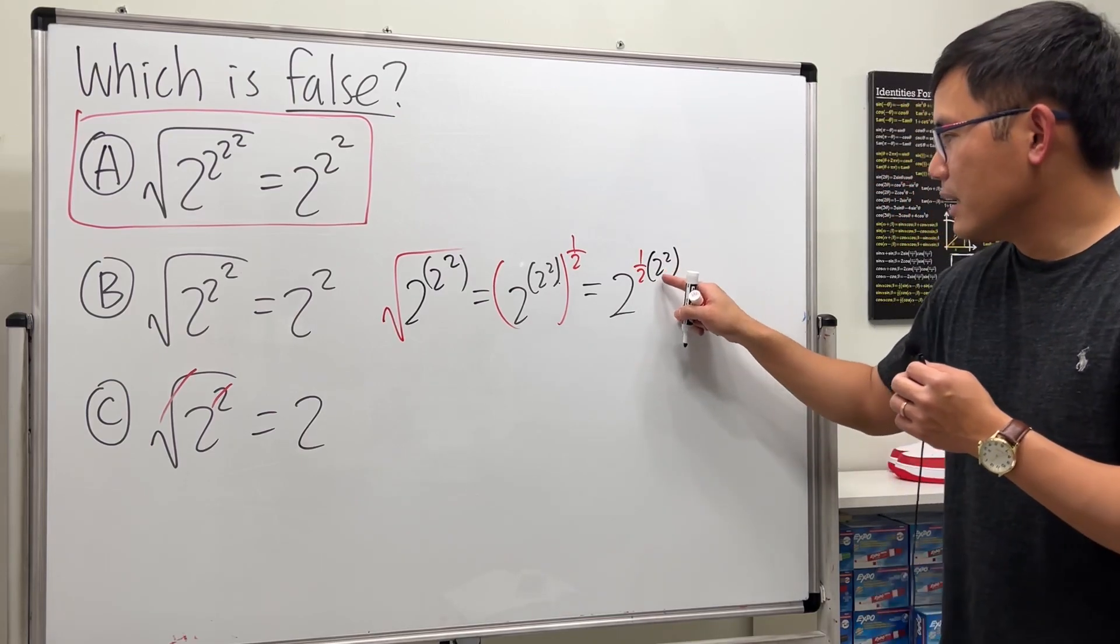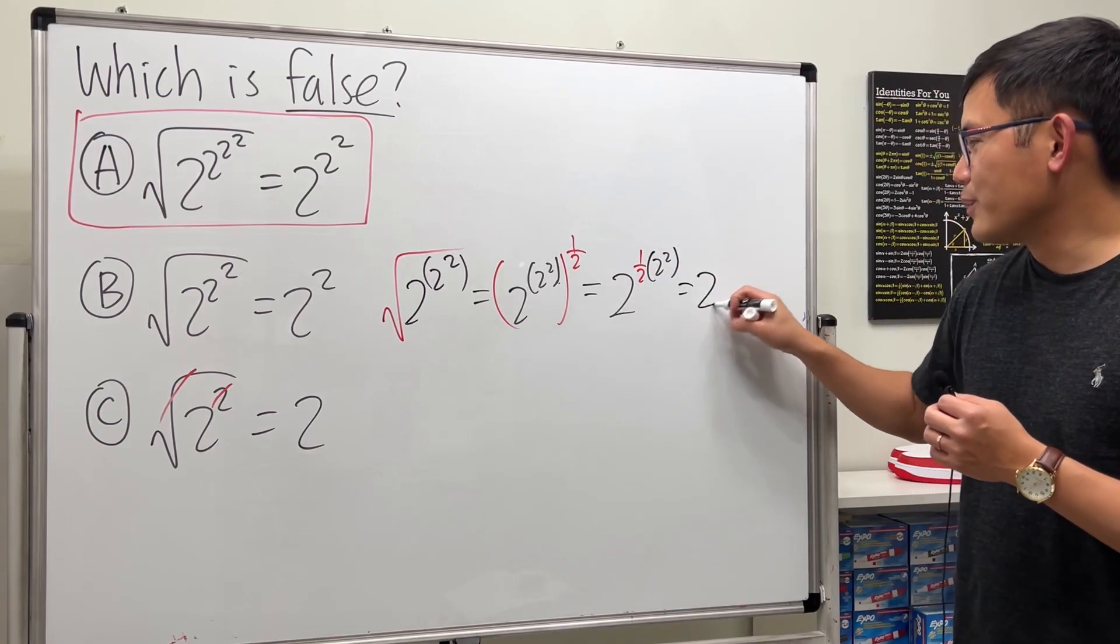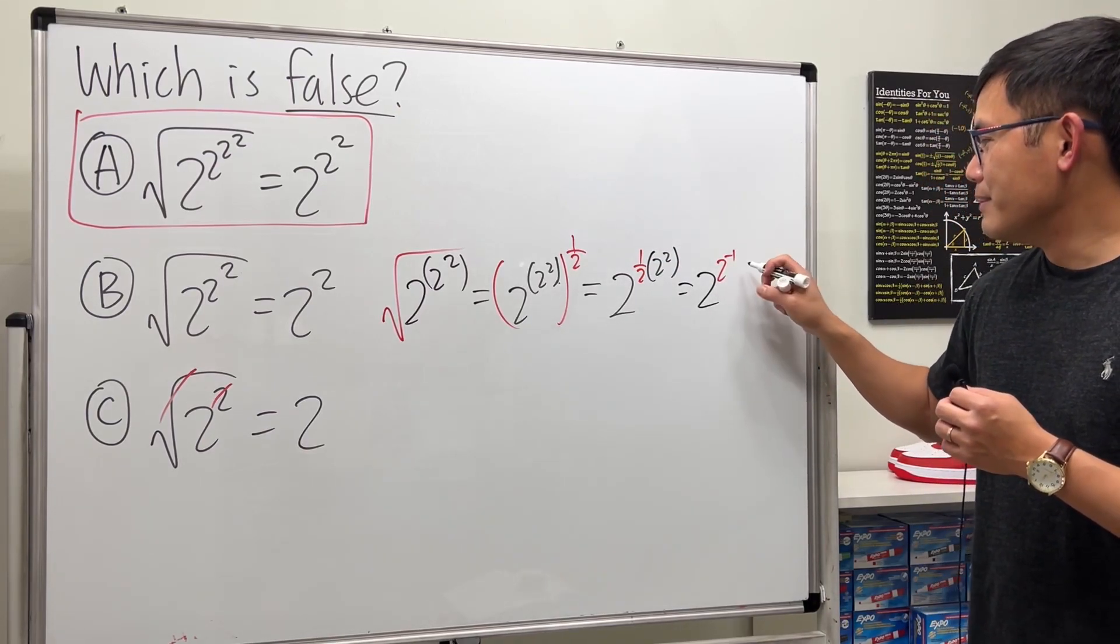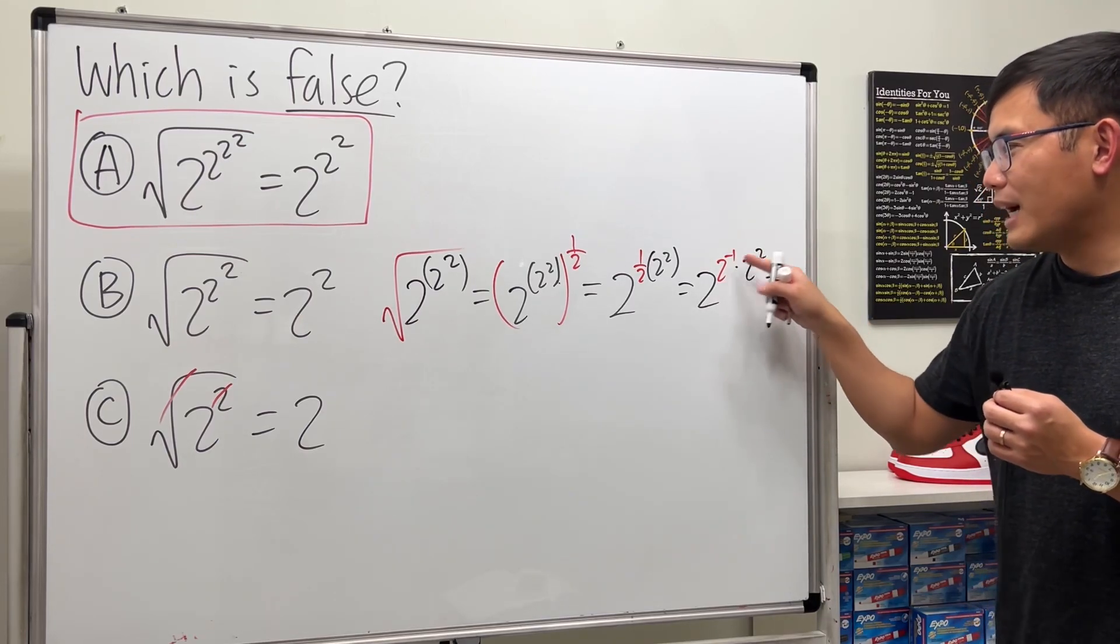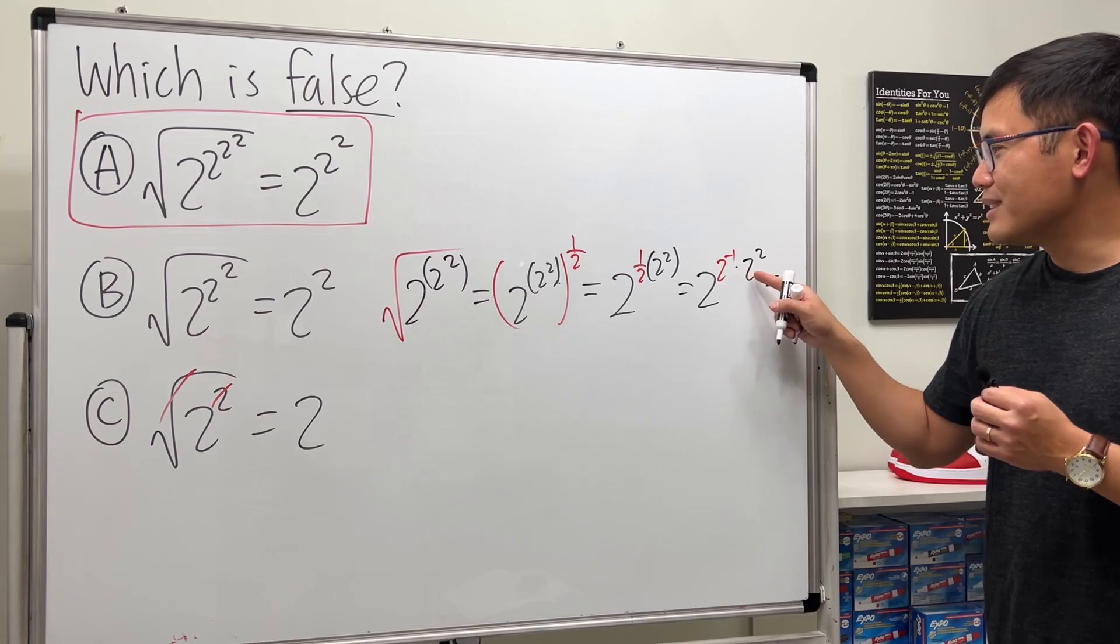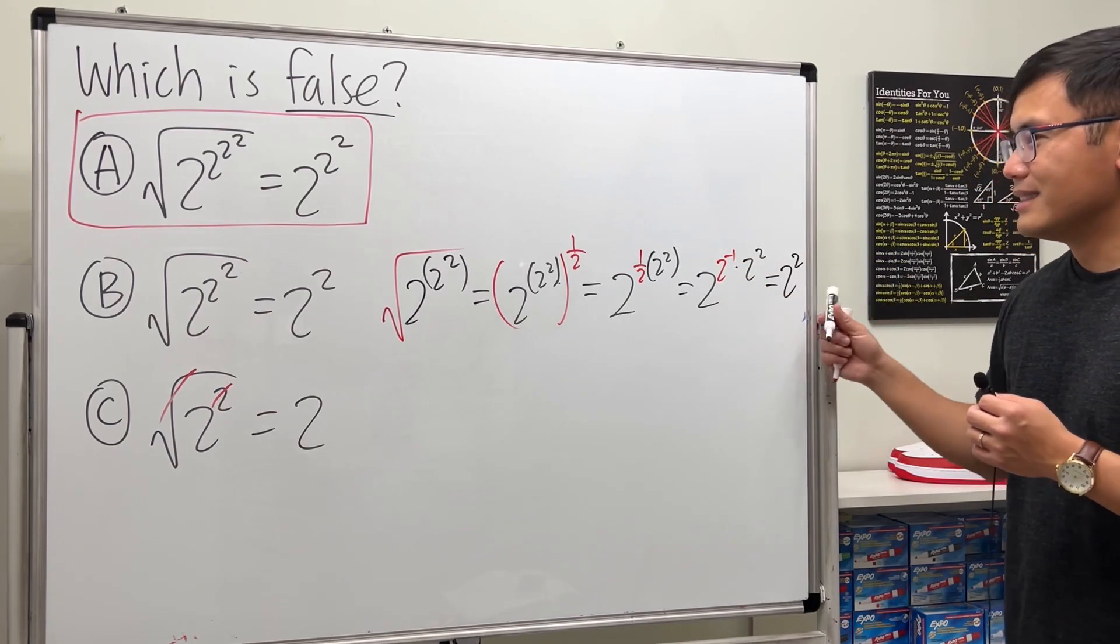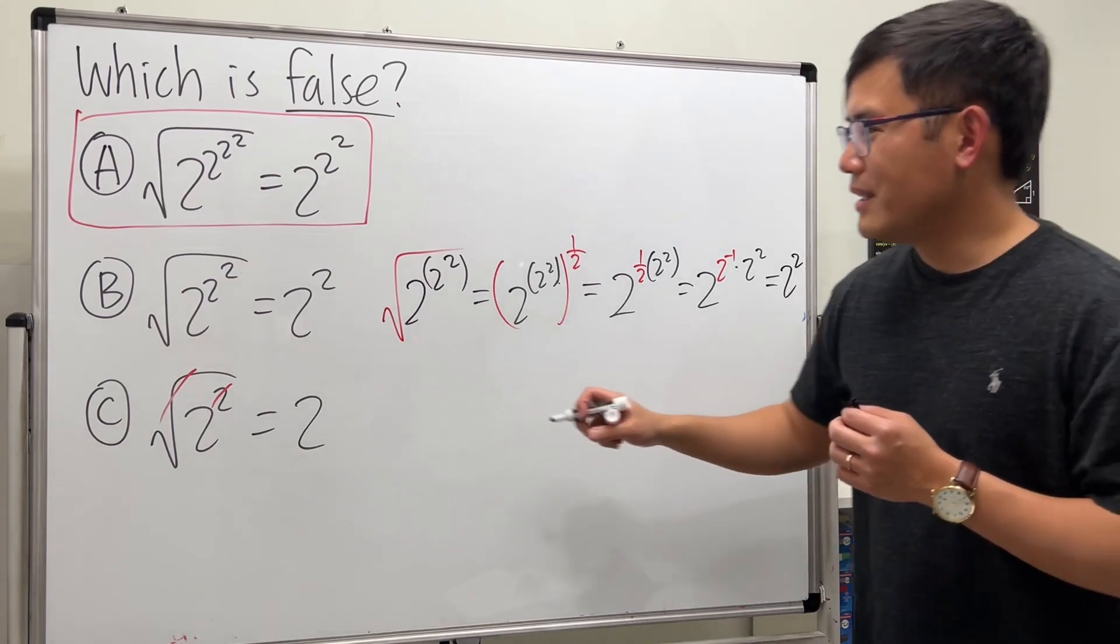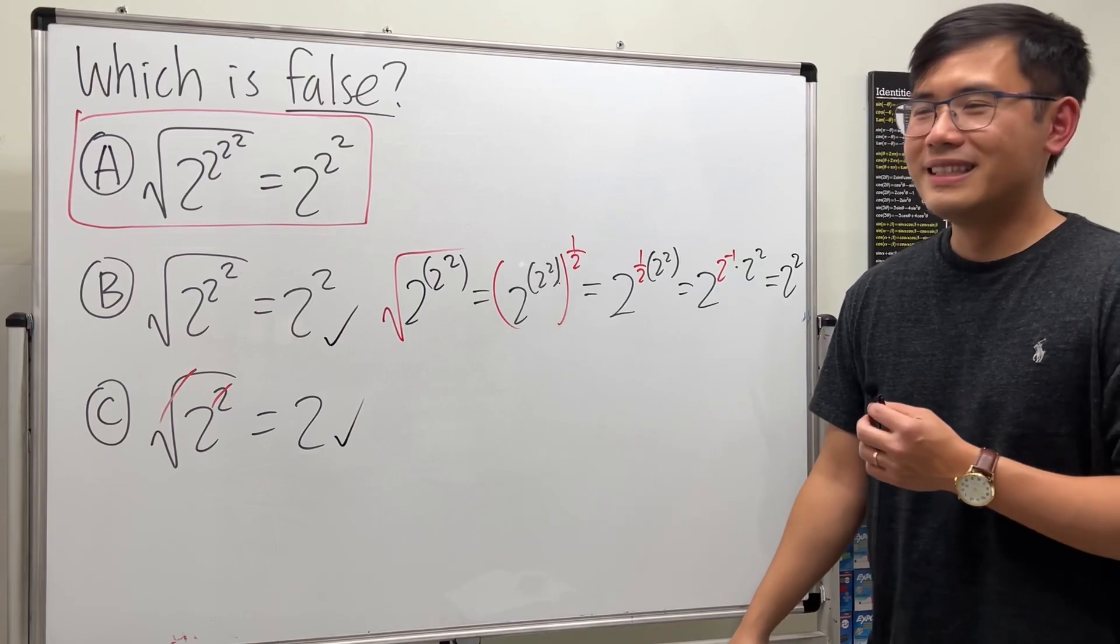And you get 2 to the first power. So finally it's just 2^2. Done! So this is true. And of course, by the law of multiple choice, A has to be false. Well, let's also talk about why A is false.